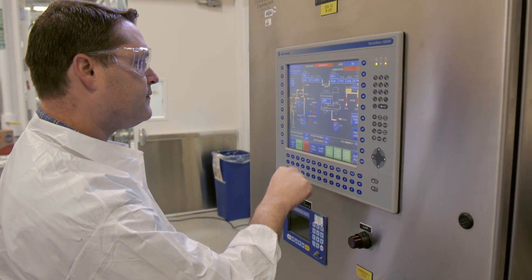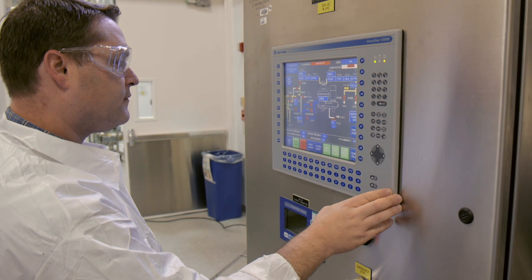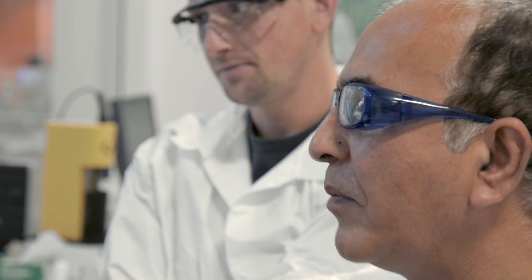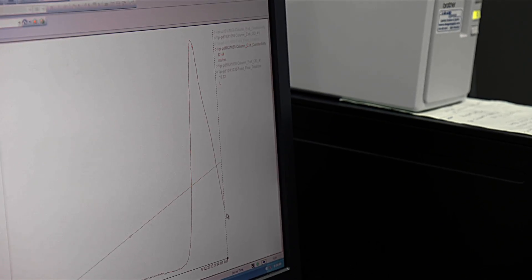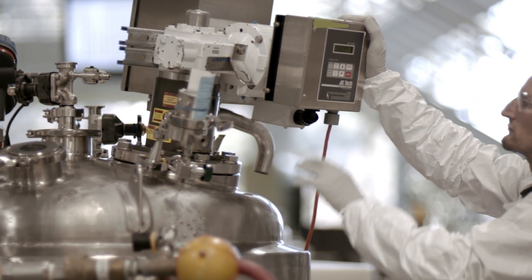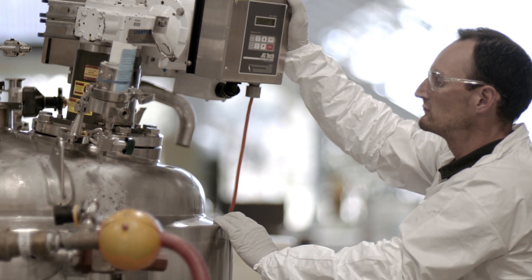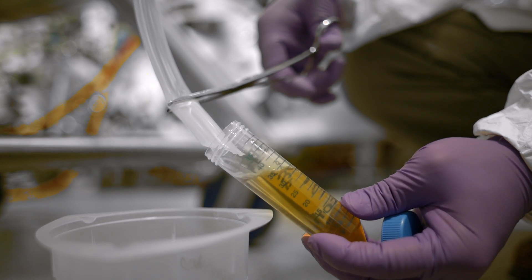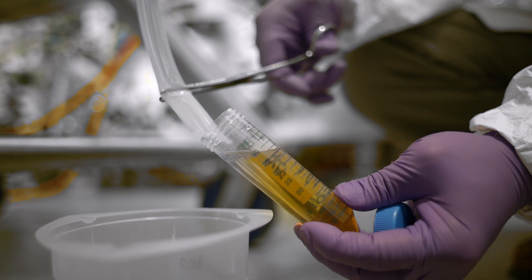A purification process is intended to isolate single species of the protein therapeutic that we're manufacturing, removing impurities, cells themselves, fragments of those cells, residual nucleic acids or proteins that aren't part of the product, and isolating to 99.9% purity the active pharmaceutical ingredient or the drug substance that we manufacture.